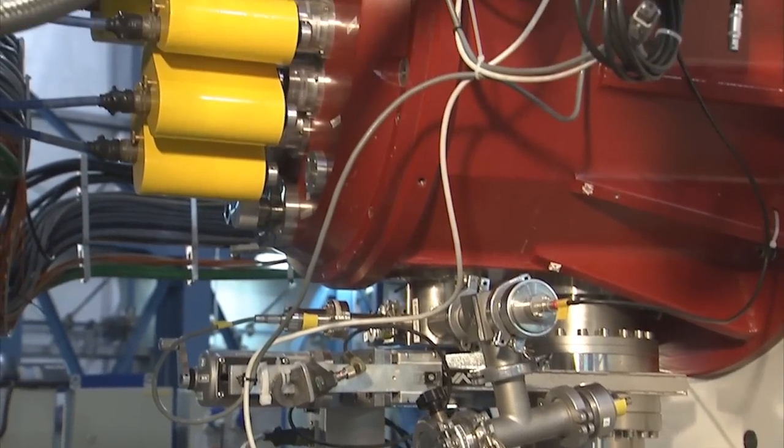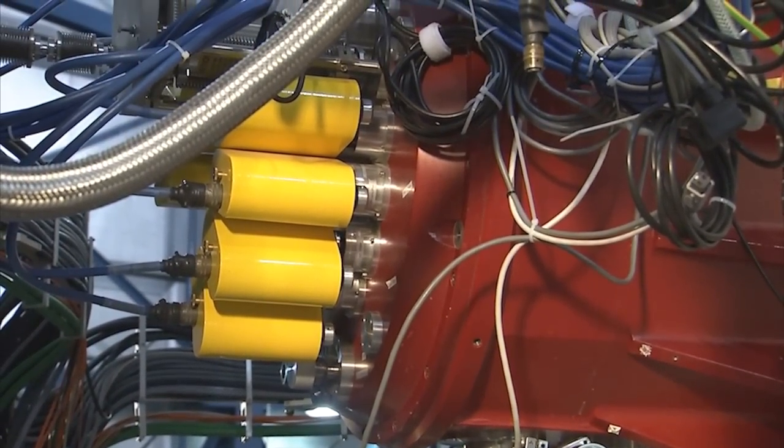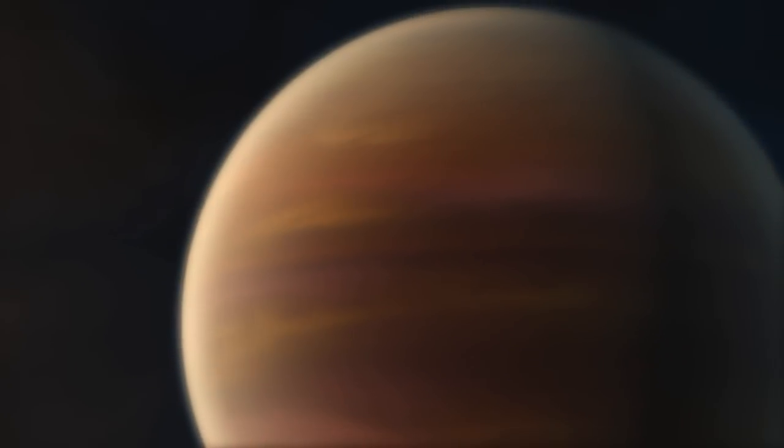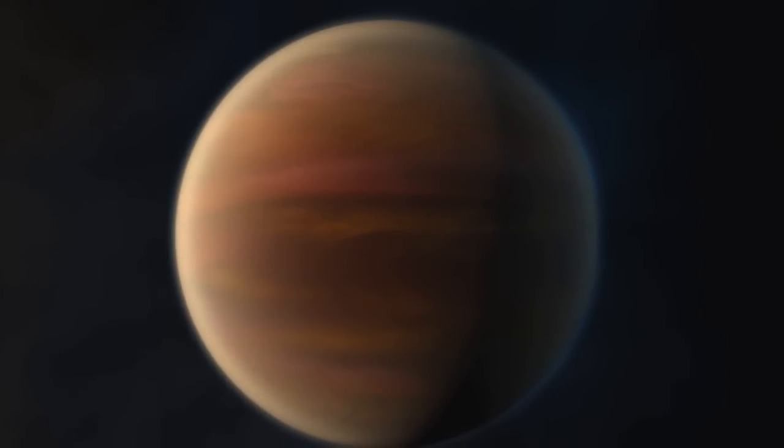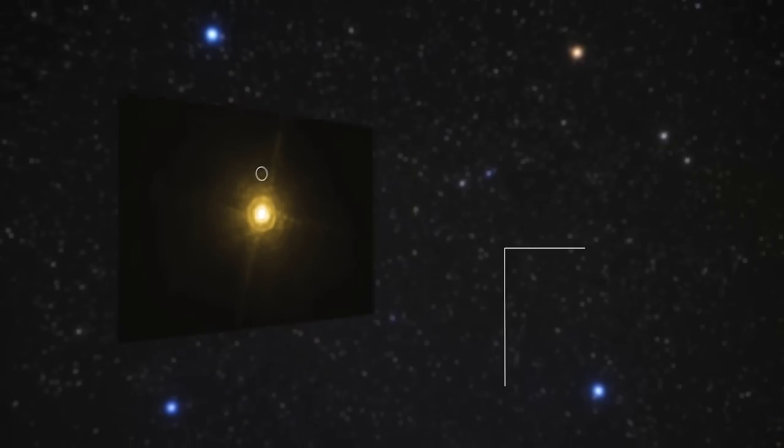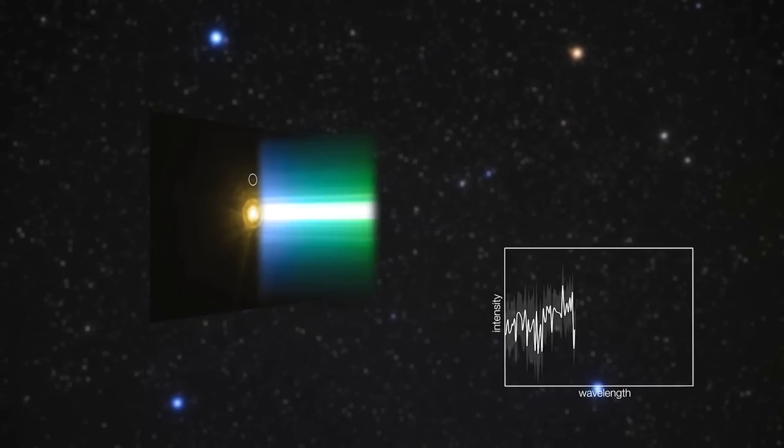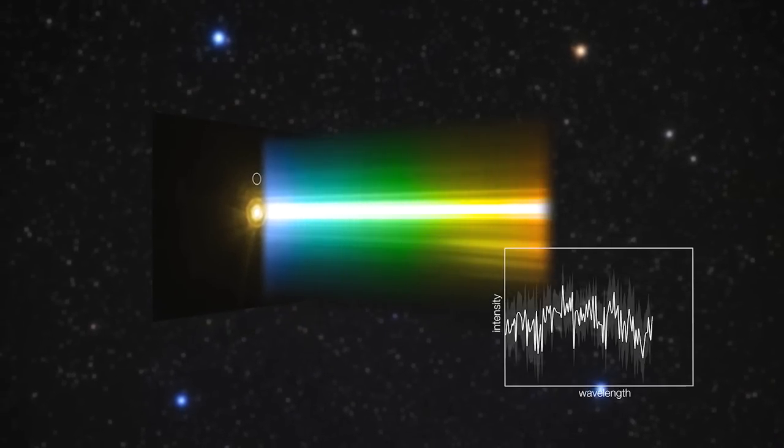NACO's eagle-eyed vision made it possible to measure the light of planet C, a gas giant ten times more massive than Jupiter. Despite the glare of the parent star, the feeble light of the planet could be stretched out into a spectrum, revealing details about the atmosphere.